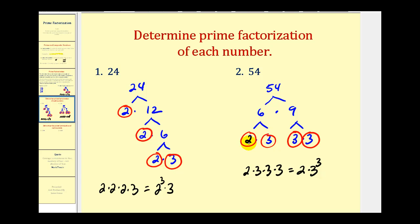The reason I like to circle each of the prime numbers is that if you get in a hurry, it can be easy to forget about one of the prime factors and therefore get the wrong answer. Looking back at number twenty-four, notice that if we didn't circle the two's, it might be easy to forget about them. Remember, the product of these primes has to give us the original number.